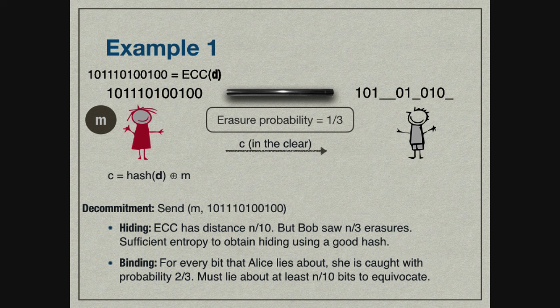What about binding? Suppose Alice wants to change her message M after decommitment phase. To do that, she needs to change D, and to change D, she needs to change this value obtained as error-corrected code applied to D. But these random bits cannot be changed, because the moment she tries to change even one bit, she gets caught with probability two-thirds. She doesn't know whether Bob obtained an erasure or not. Bob can check whether she is claiming the correct bit during decommitment. For every bit Alice lies about, she gets caught with some probability. A simple union bound tells us that if she tries to lie about n over 10 bits, she gets caught with overwhelming probability. If she tries to lie about less than n over 10 bits, the minimum distance of the error-correcting code ensures she cannot change vector D. Therefore, Alice is committed. This is a secure commitment protocol.